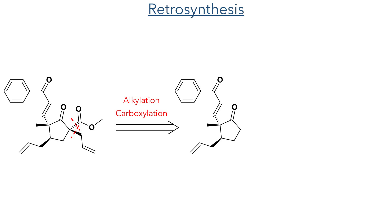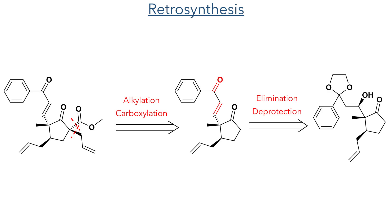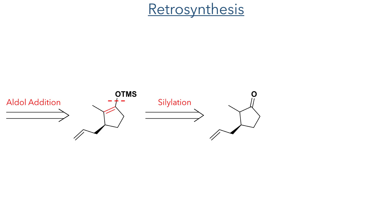Simple alkylation would introduce another of these alkenes, and carboxylation using Manders reagent would furnish the desired ester. The enone pendant group could be generated using the elimination of an aldol product and deprotection of the masked ketone. This leads back to a simple silyl enol ether, which in turn would be generated from a monocyclic ketone bearing a pendant allyl group.